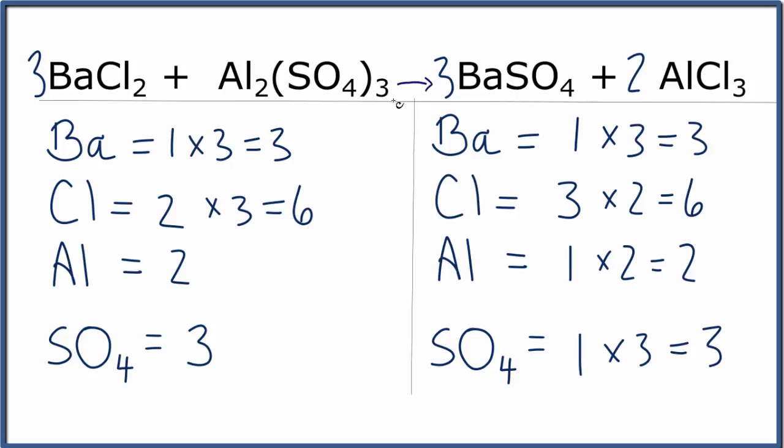The trick is, if you see a polyatomic ion like SO4, the sulfate ion, and it's on both sides, just consider it to be one item. That will make the balancing quite a bit easier.